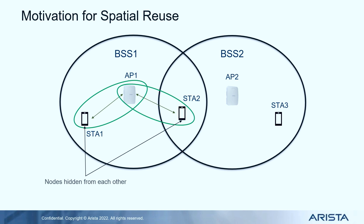This problem has been solved to some extent by multi-user transmissions in 11ax, where the access point can schedule transmissions on the uplink so that multiple stations can transmit at the same time by splitting the frequency resources using OFDMA. So to some extent that problem is less severe with OFDMA.